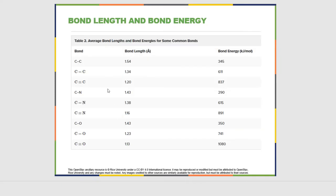When we look at this in terms of bond lengths, we see that there's an inverse trend. The bond energy increases from a single to a double to a triple, and the bond length decreases. A carbon-carbon single bond is 1.54 angstroms, double is 1.34 angstroms, and a triple is 1.20 angstroms. So a triple bond is more stable and it is shorter than a double or a single bond.